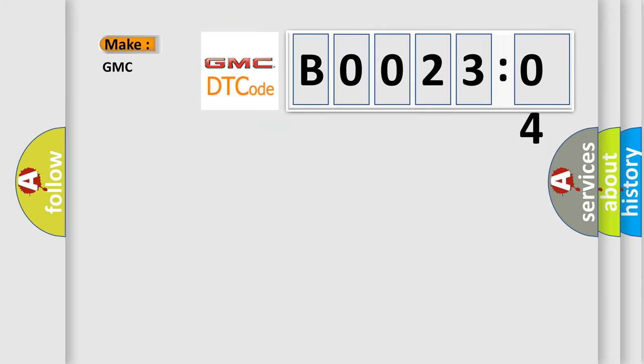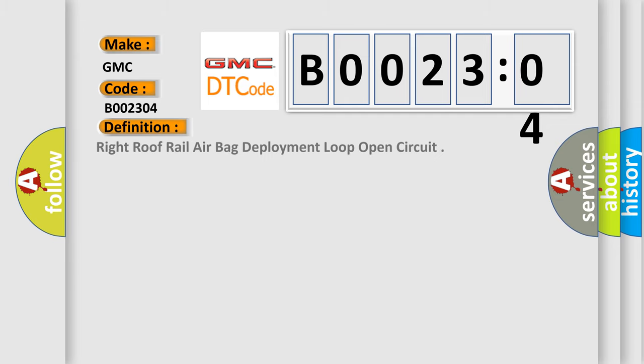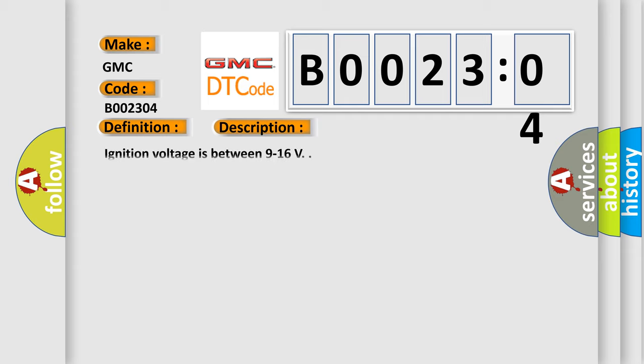So, what does the diagnostic trouble code B002304 interpret specifically? GMC car manufacturers. The basic definition is: right roof rail airbag deployment loop open circuit. And now this is a short description of this DTC code.